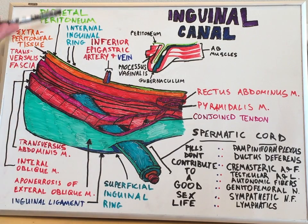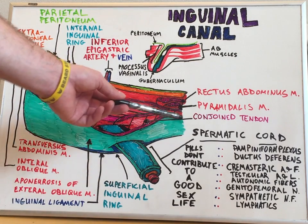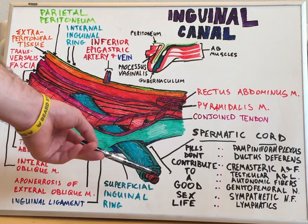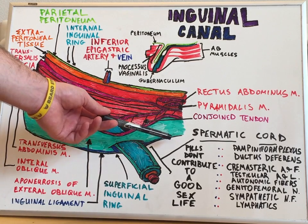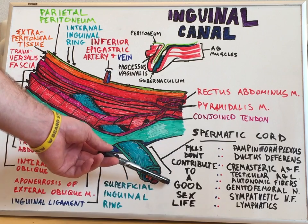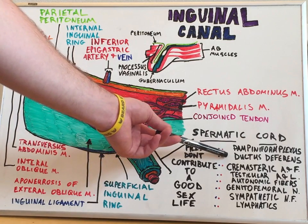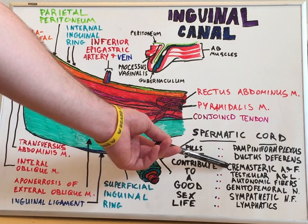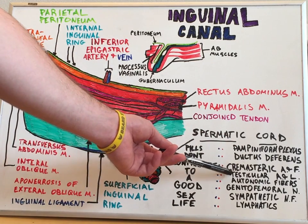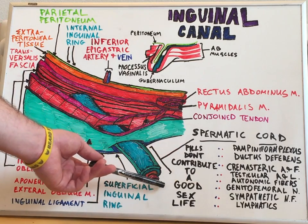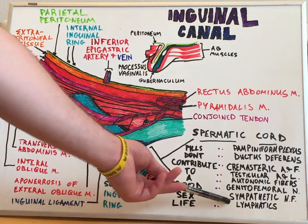This essentially creates a passageway for the spermatic cord. I have a mnemonic to help you understand all of the different structures passing through within the spermatic cord: "Pills don't contribute to a good sex life." P — Pampiniform Plexus; D — Ductus deferens; C — Cremasteric artery and fascia; T — Testicular artery and lymphatics; A — Autonomic fibers; G — Genitofemoral nerve; S — Sympathetic nerve fibers and lymphatics.